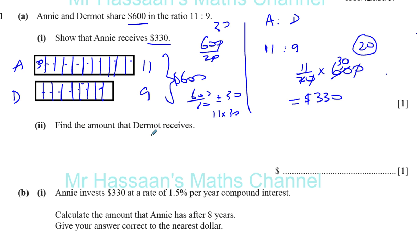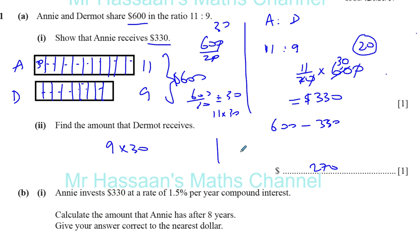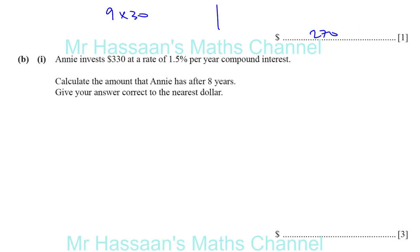Find the amount that Dermot receives. We can say either 9 times 30, which is 270, or we can say it's 600 minus 330, which gives you the same answer — whichever way you want to choose. Because the total is 600 and Annie receives 330, Dermot must receive the rest. In either case you'll get 270 as your answer.